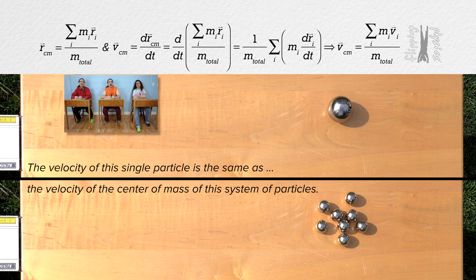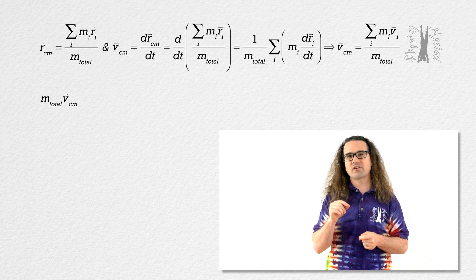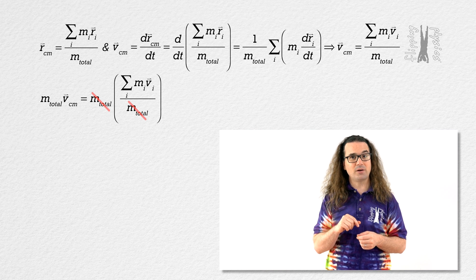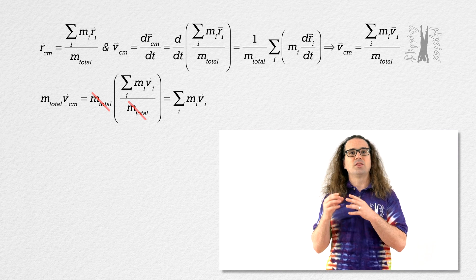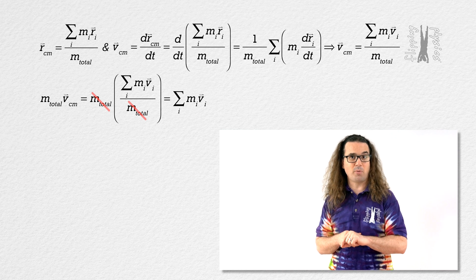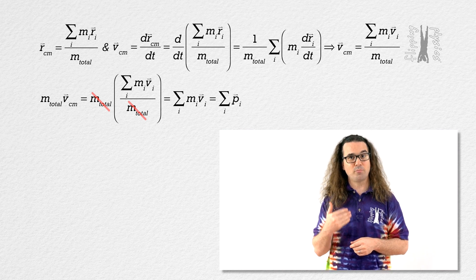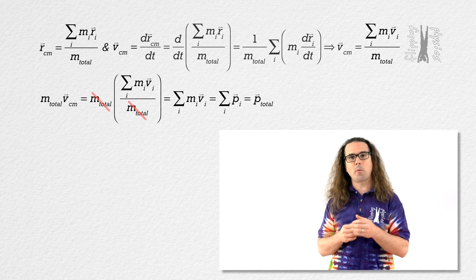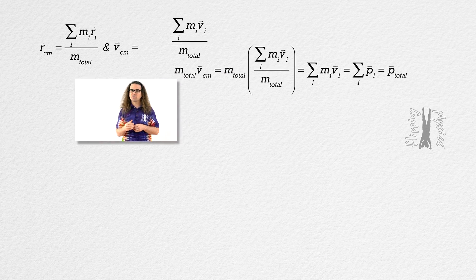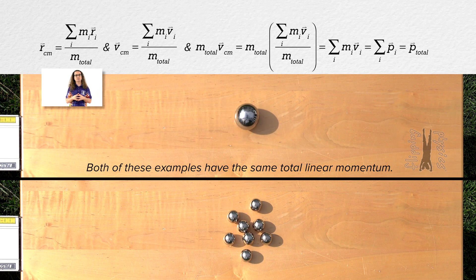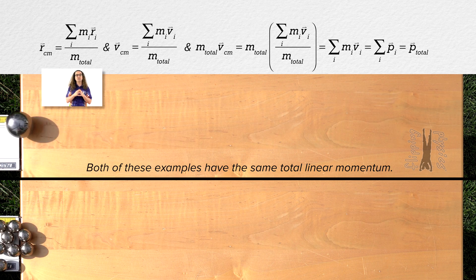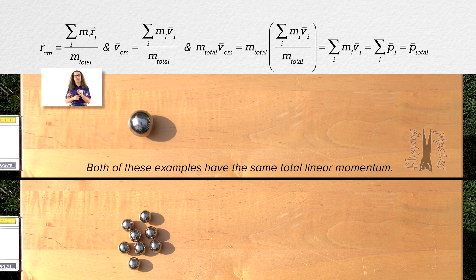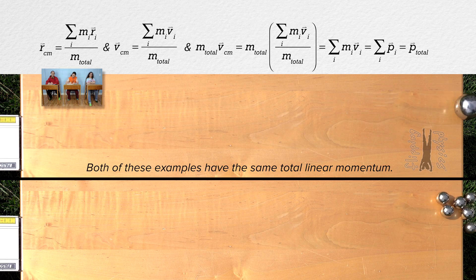Actually, we can go even further. If we multiply the velocity of the center of mass of the system of particles by the total mass of the system, the total mass of the system cancels out, and we are left with the sum of the mass of the i-th particle times the velocity of the i-th particle, which equals the linear momentum of the i-th particle. And when you sum the linear momentum of all the particles, you get the total linear momentum of the system of particles. In other words, the total linear momentum of a system of particles is the same as the linear momentum of a single particle with a mass equal to the total mass of the system, moving at the velocity of the center of mass of the system.